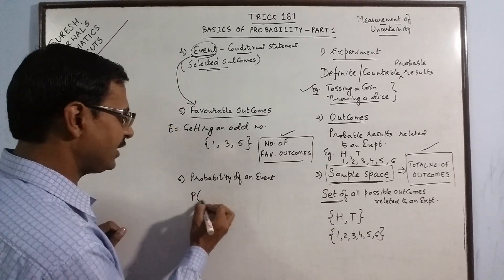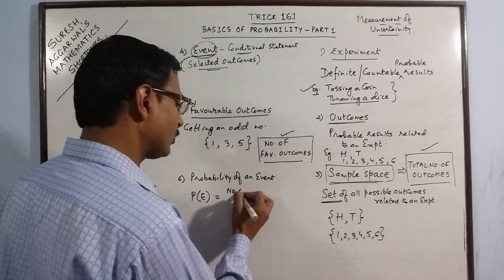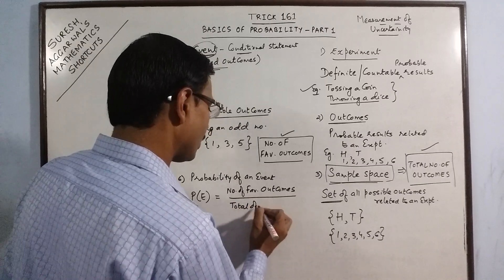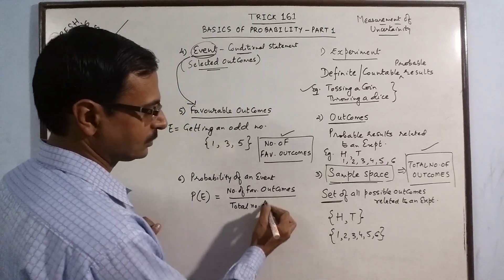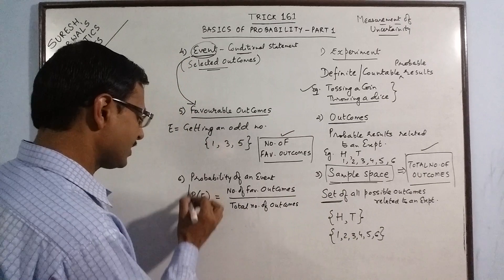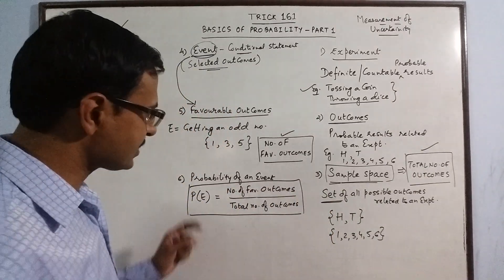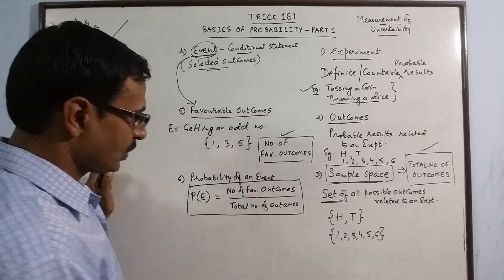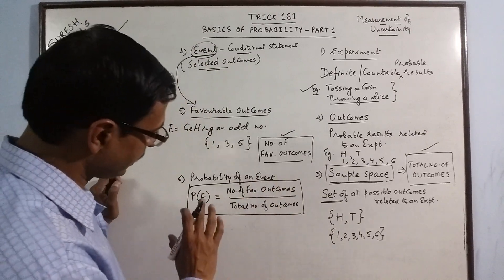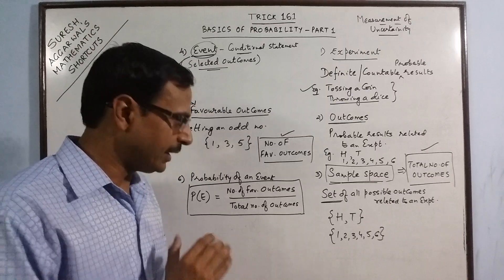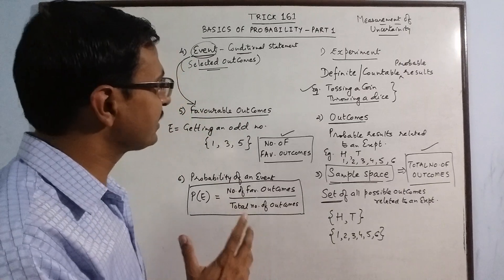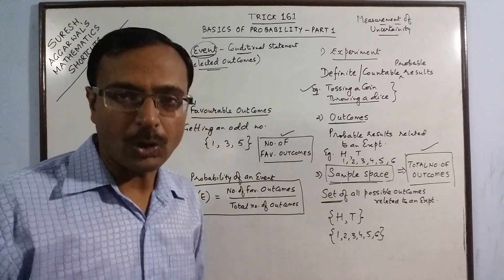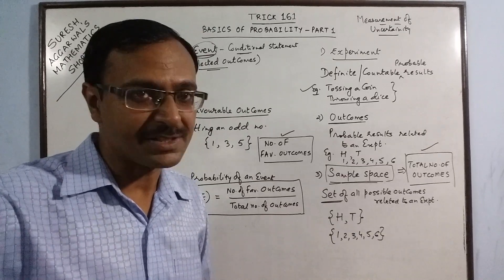The probability of event E is simply: divide the number of favorable outcomes by the total number of outcomes — that gives you the probability of the event. This is the formula for finding the probability of an event. There are more things related to this formula which we can discuss in part 2 of this video. So follow this series of videos on probability — I am sure you will be benefitted in the long run while studying mathematics. Keep learning, keep sharing, and subscribe to the channel if you like it.